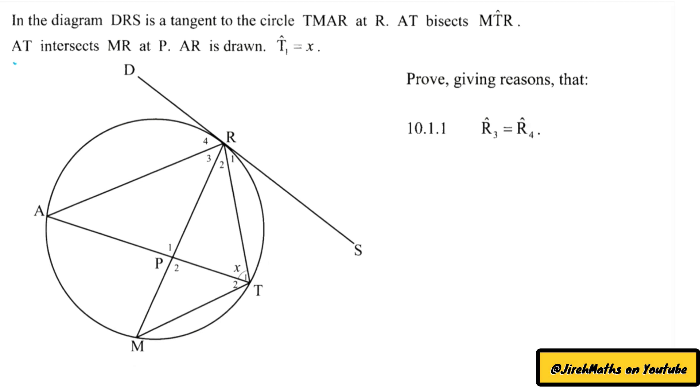looking at the question. They give us a useful piece of information that AT bisects MTR, so first let's draw in MTR. We're going to start with M, draw a line to T, then from T we are going